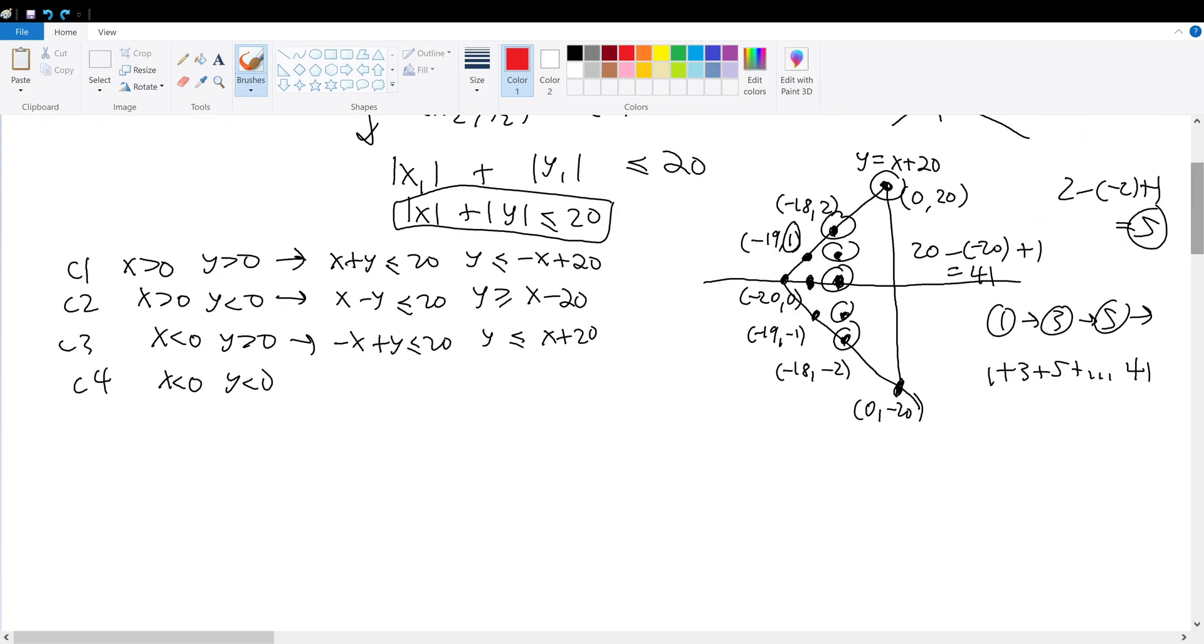1 + 3 + 5 + all the way up to 41 gives what? Gives the number of points on the left side. But for the right side, we cannot include this line right here. That has to be 1 + 3 + 5 + all the way up to 41 minus 41. That would be our number of points for the right side. We add this with this, and we get our final answer.